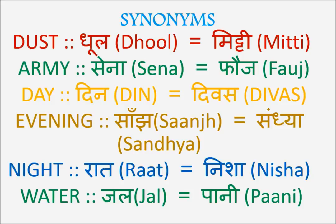Continuing the revision: 'saanj' or 'sandhya' means evening. 'Raat' means night — another word is 'nisha,' and 'ratri' is also synonymous with 'raat.' And 'jal' and 'paani' both mean water.